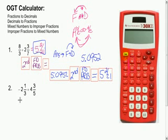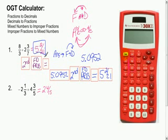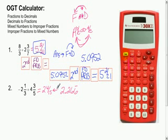Let's try number 2: enter negative 2 and 1 third plus 4 and 3 fifths. Your fractional answer is 2 and 4 fifteenths. Then do second, F-to-D, equals, and your answer as a decimal is 2.266 repeating. Go ahead and play around going back and forth between fractions and decimals to get used to the keystrokes.